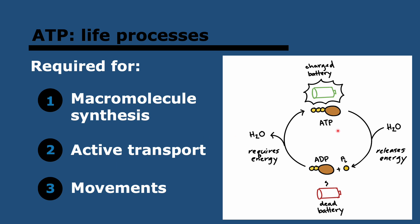ATP, adenosine triphosphate, has three phosphate groups — this is a charged battery, one that has energy in it. You can then break the bond between one of these phosphate groups and you get ADP, adenosine diphosphate. Basically, you lose one phosphate and in the process you release energy. That can be the dead battery, and then you can go again from ADP back to ATP.